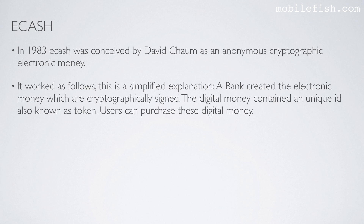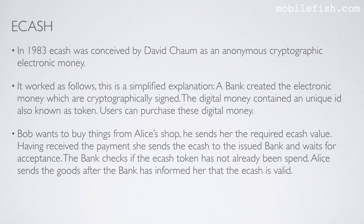Users can purchase this digital money. Bob wants to buy things from Alice's shop. He sends her the required eCash value. Having received the payment, she sends the eCash to the issuing bank and waits for acceptance. The bank checks if the eCash token has not already been spent.